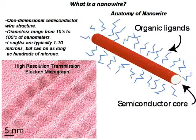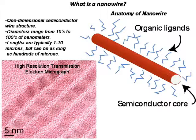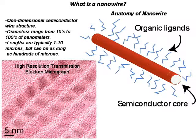In general, nanowires are cylindrical nanostructures that are crystalline and have diameters from a few nanometers to hundreds of nanometers and lengths between one to 100 microns.